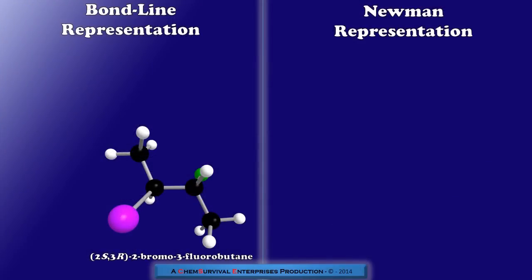I'd like to thank Frank for that introduction on his technique for converting bond line representations into Newman representations. And now it's my job to show you in three dimensions what Frank was trying to show you using those two-dimensional drawings on the whiteboard. And to do that, I'm going to use the same molecule that Frank did, 2S3R 2-bromo-3-fluorobutane. And its name really isn't all that important.